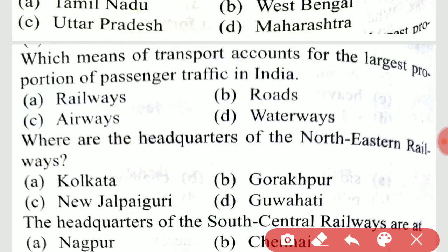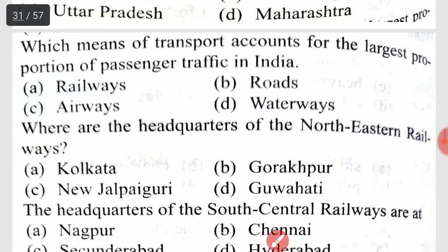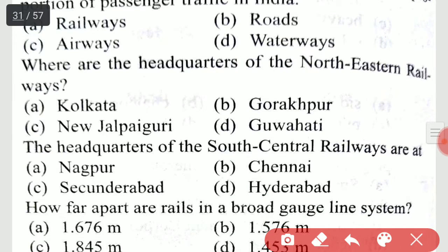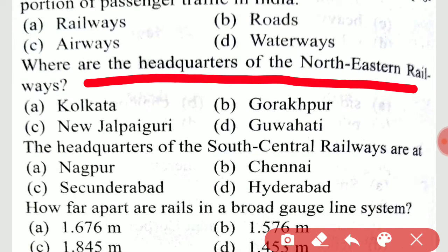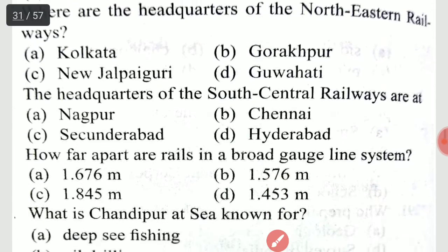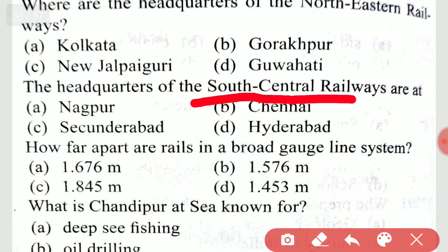Which means of transport accounts for the largest proportion of passenger traffic in India? Obviously, it is railways. The headquarters of the Northeastern Railways is in Gorakhpur. The headquarters of the South Central Railways are at Secunderabad.